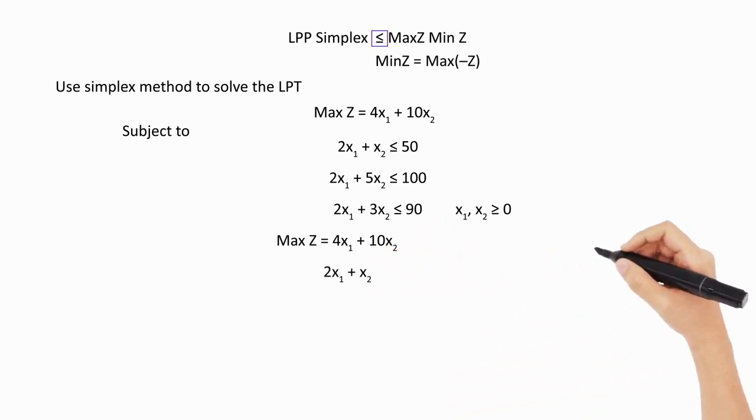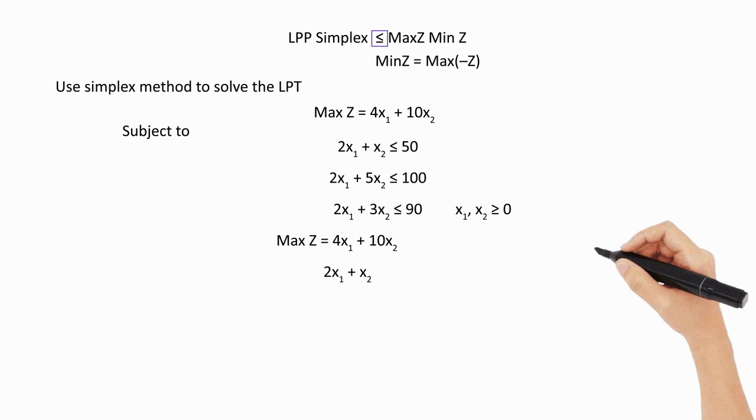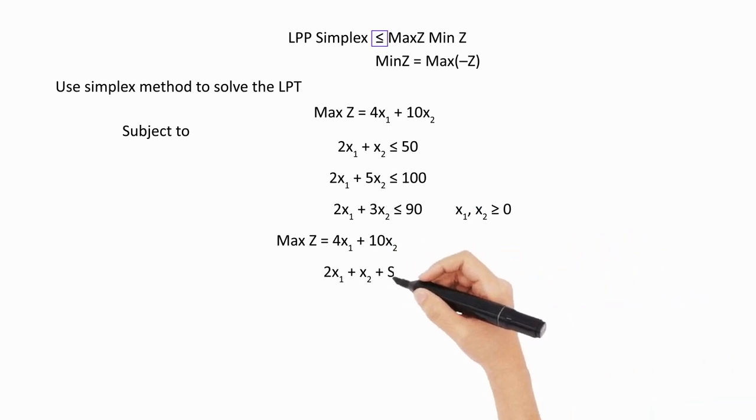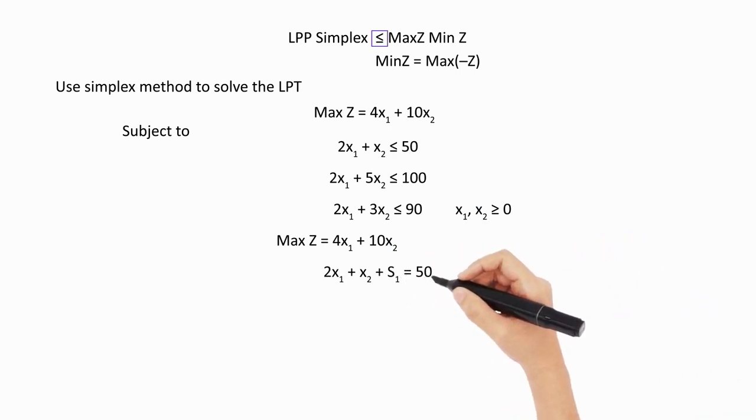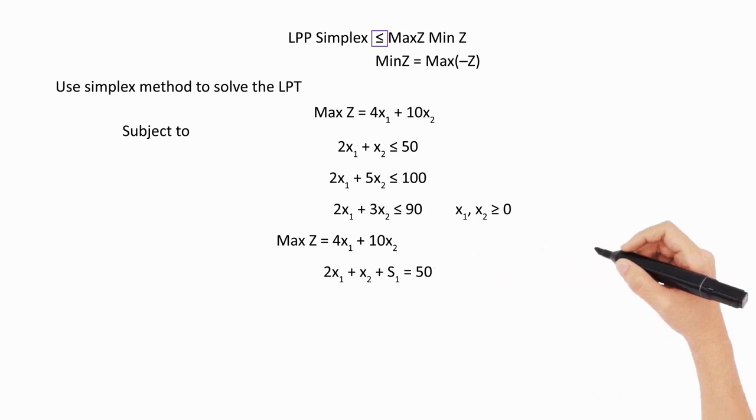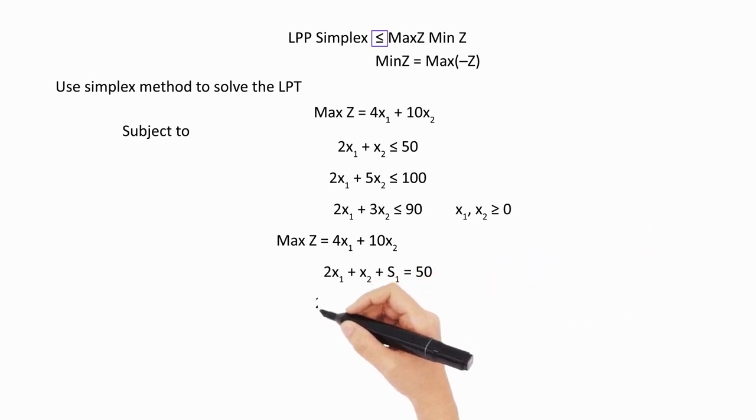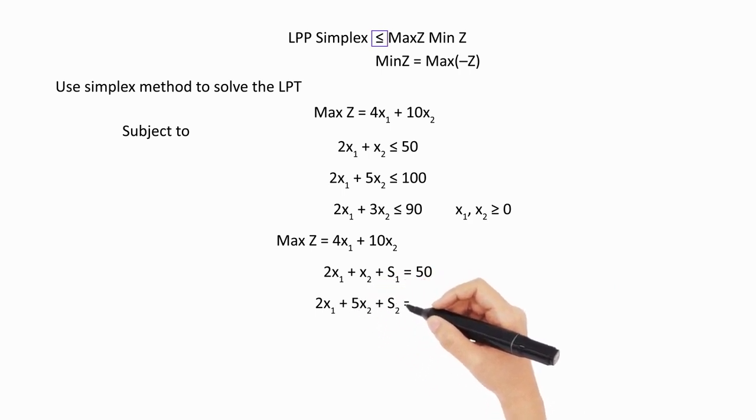Now the constraints that we have: we have 2x1 + x2. Since it is less than or equal to, it is clearly understood that we have to add a slack variable called s1 so that it is equated to 50. Same way, we have the second inequality: 2x1 + 5x2, and we introduce one more slack variable called s2, and then it is equal to 100.